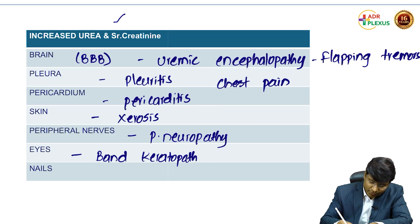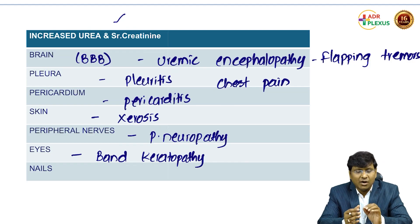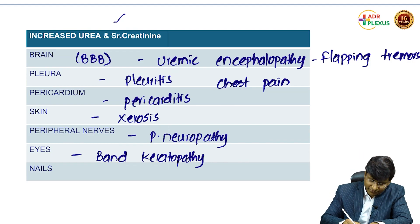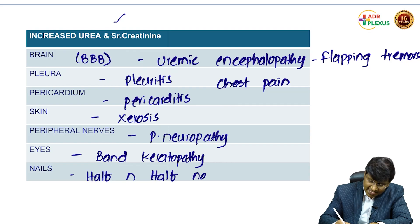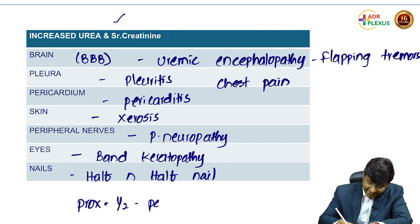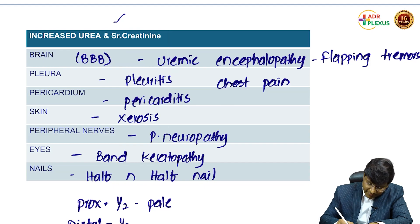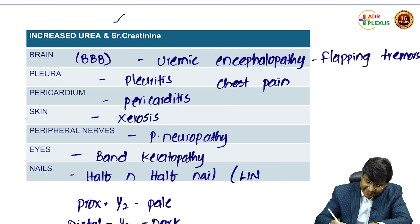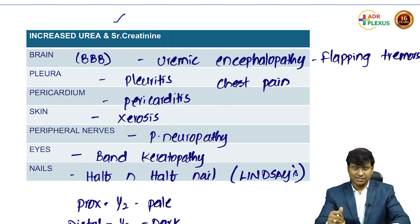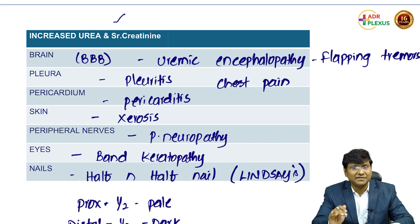In patients with chronic renal failure, when you observe the nails, they will have what is called half and half nails, also called Lindsay's nail. The proximal half of the nail is pale in color whereas the distal half of the nail is dark. This is the nail abnormality in these individuals.